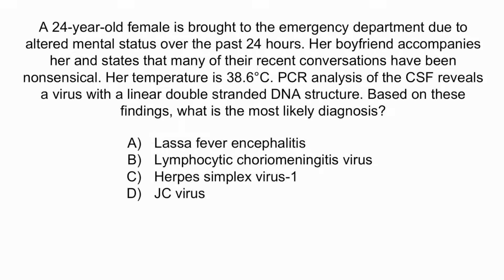Now let's review with a question. A 24-year-old female is brought to the emergency department due to altered mental status over the past 24 hours. Her boyfriend accompanies her and states that many of their recent conversations have been nonsensical. Her temperature is 38.6 degrees Celsius. PCR analysis of the CSF reveals a virus with a linear, double-stranded DNA structure. Based on these findings, what is the most likely diagnosis? Hopefully from the question stem you noticed that this patient has mental status changes and a fever of 38.6 — these two symptoms are concerning for encephalitis or meningitis. However, we must rely on the PCR analysis, which revealed a virus with a linear, double-stranded DNA structure. This leaves us with only one correct answer, which is C, herpes simplex virus 1.